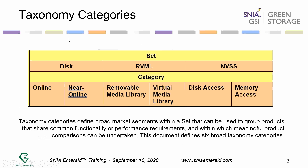In the disk set, we have two categories: online and near-online. This refers to the access time for the various types of systems. Online is immediately accessible — less than 80 milliseconds. Near-online is not as quickly accessible. Removable and virtual media libraries consist of removable media libraries, which tend to be tape or optical disk, and virtual media libraries.